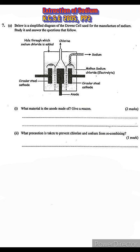Part a: below is a simplified diagram of the Down cell used for the manufacture of sodium. What material is the anode made of? Give a reason. At the anode, chlorine gas is discharged. Chlorine is a very reactive gas, so whatever material is used to make the anode should be inert — that is, unreactive — so that it does not react with chlorine. That material is graphite.